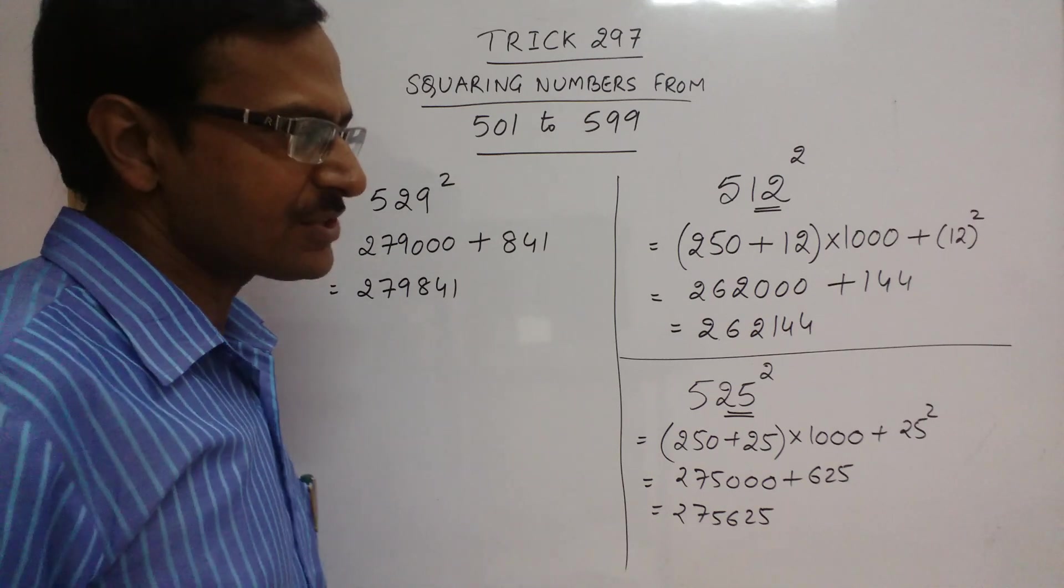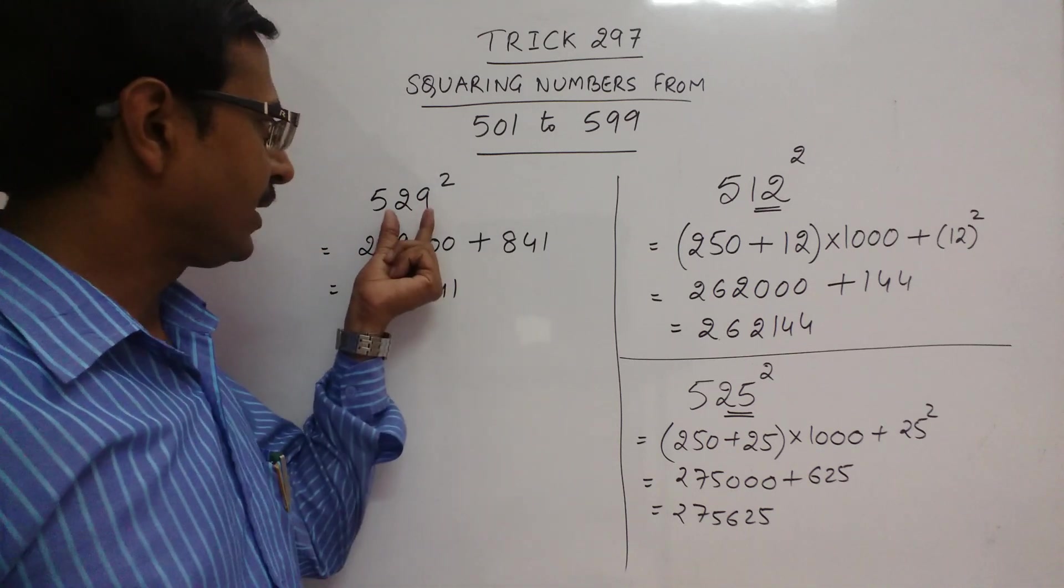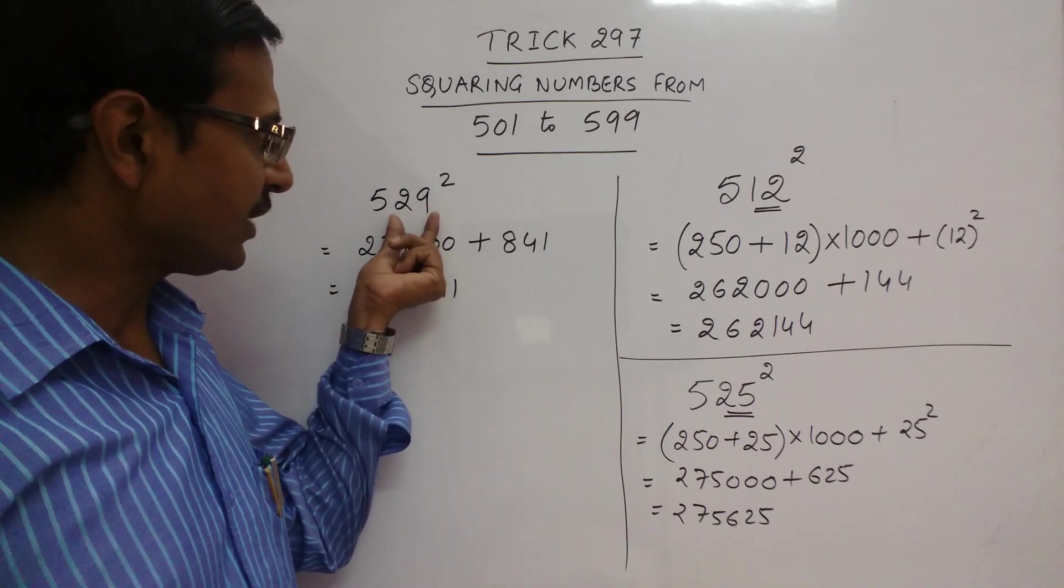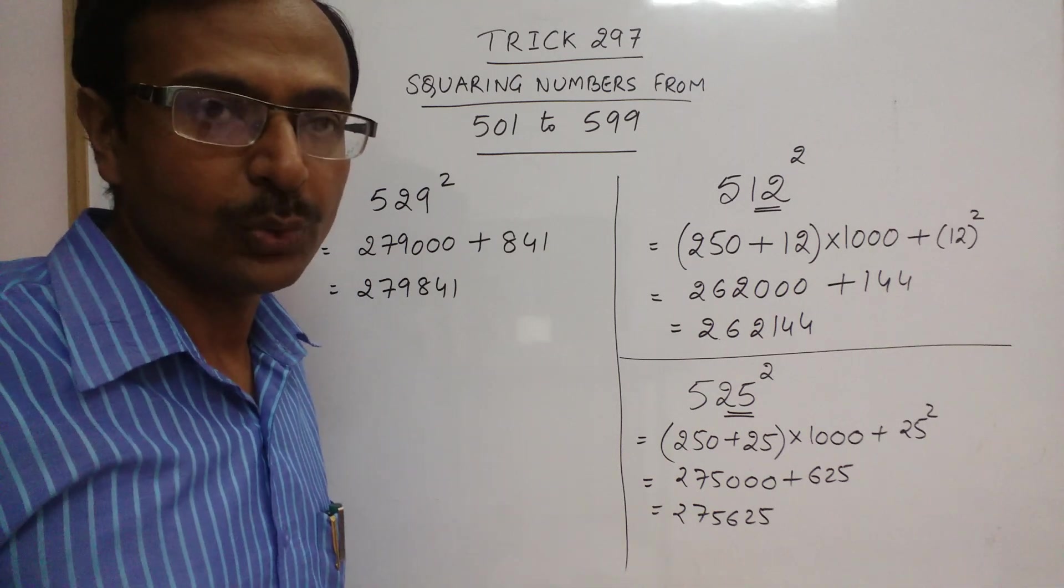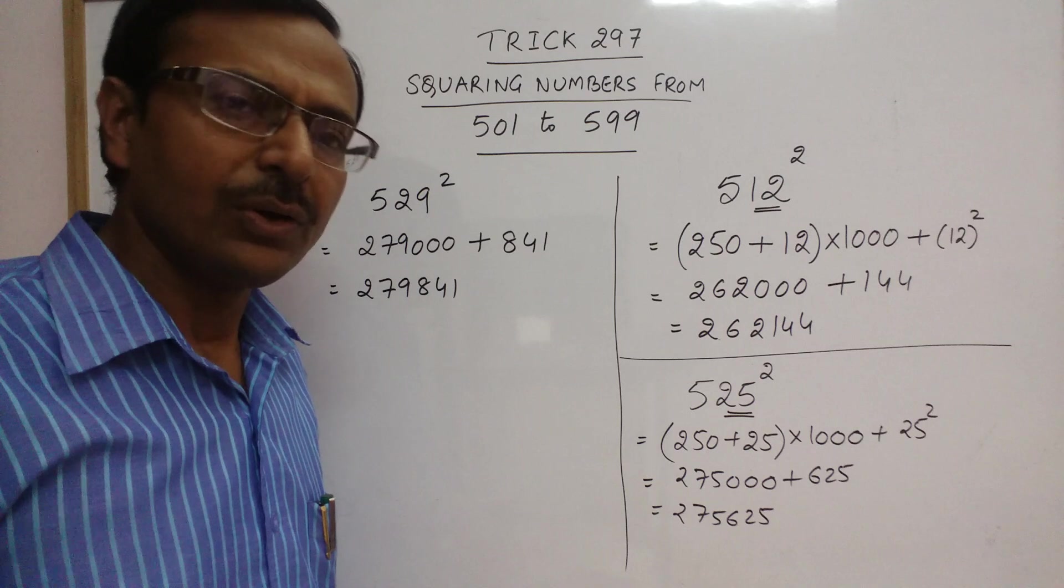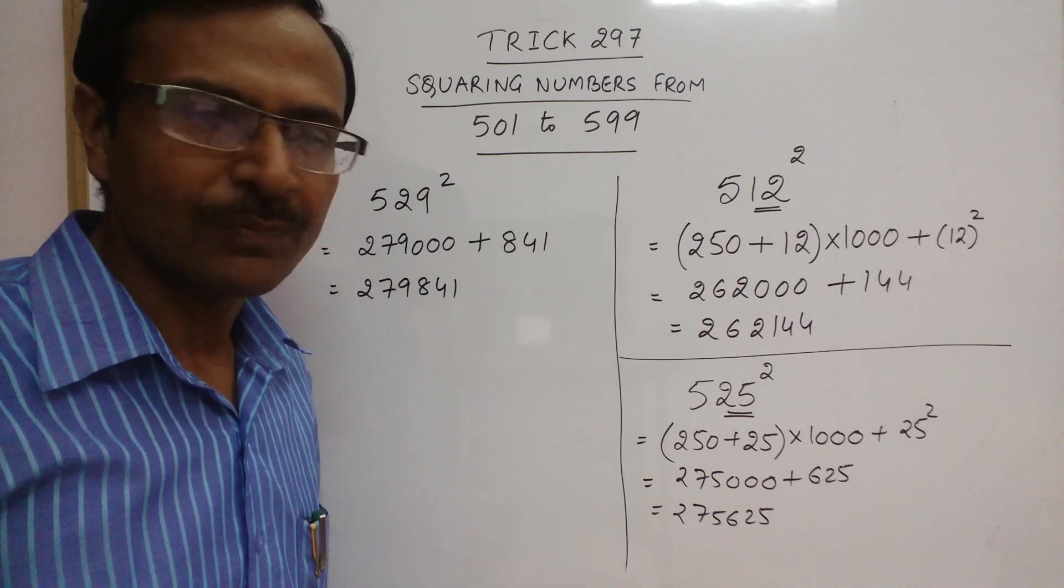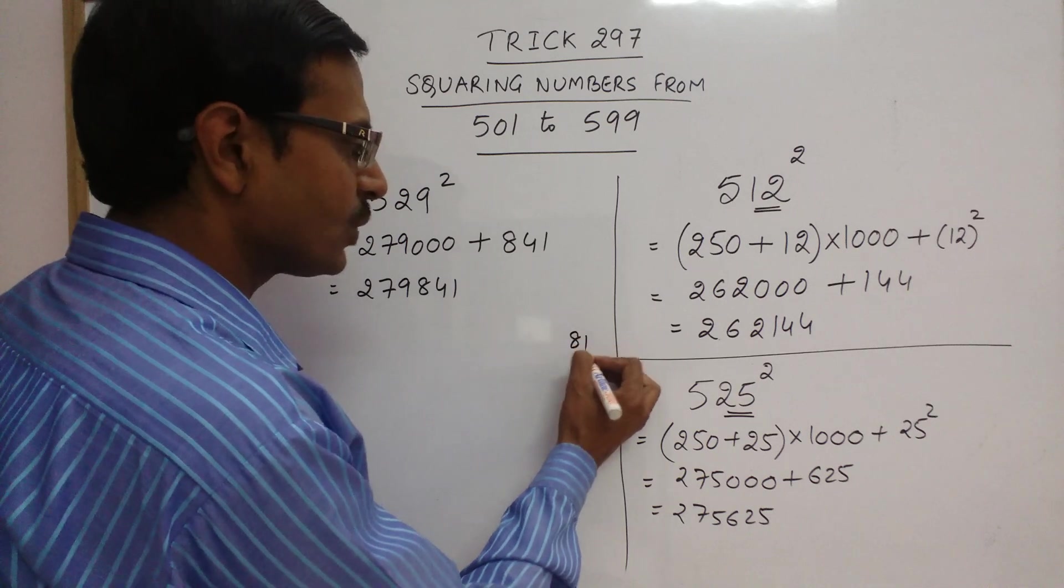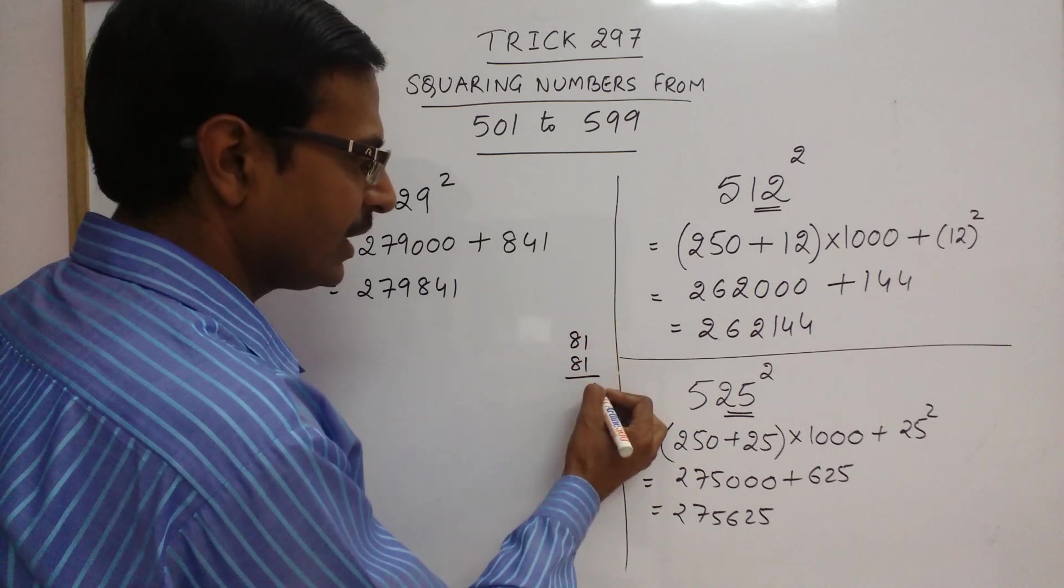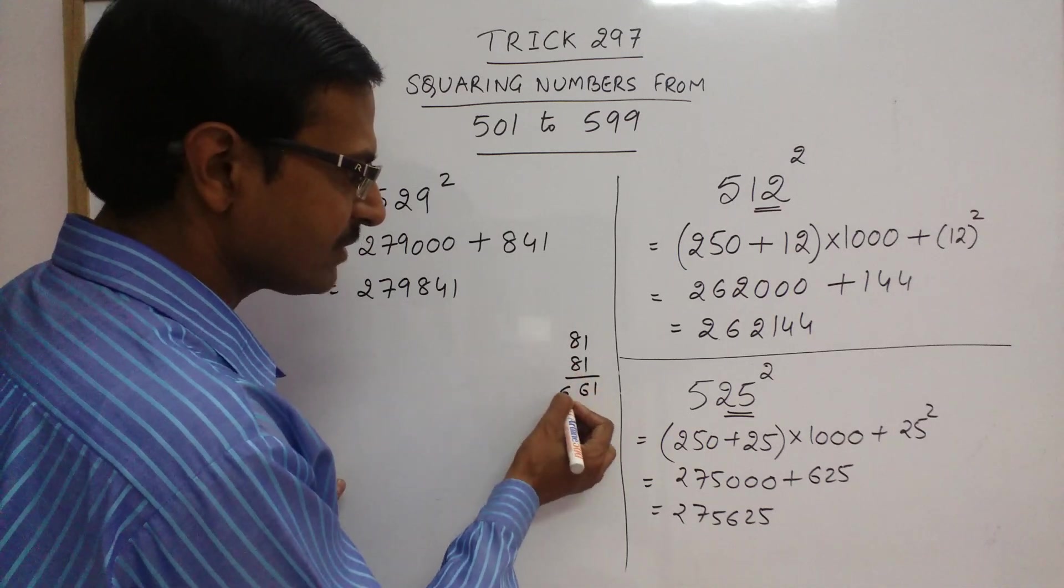You can take some larger numbers also. When you take larger numbers, the square of the number in the unit and tens place should be known to you. If that square is known, then things are simpler. You can find the square by traditional multiplication also. Like suppose you have 81. What is the square of 81? It is 1 into 1, 1. 8 plus 8, 16. 6, 1 carry. 64, 65. So 6561 is the square of 81.